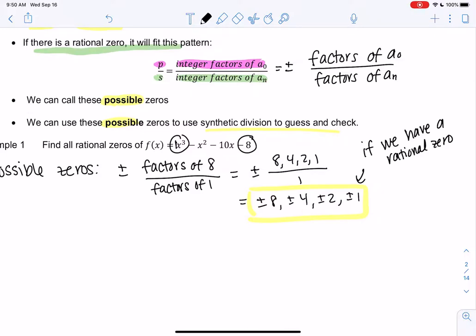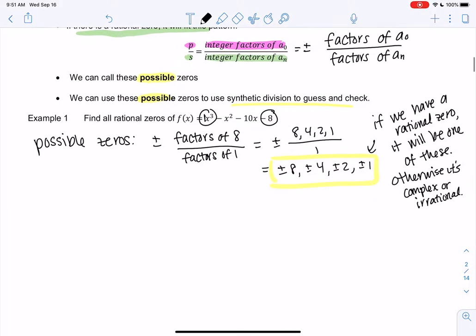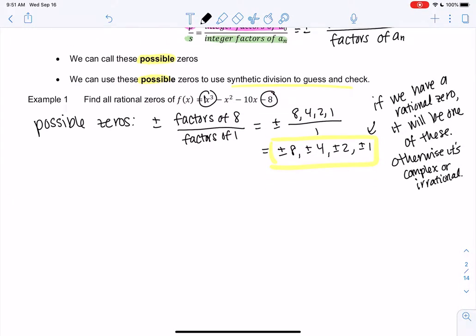Or if we have more than one, it'll be these numbers. Otherwise, we would have a complex or irrational. All right, so this doesn't tell us all zeros. It only tells us rational zeros. So we can use synthetic division to check.